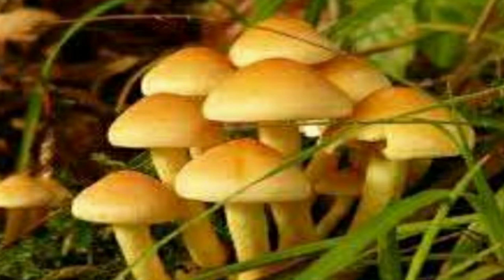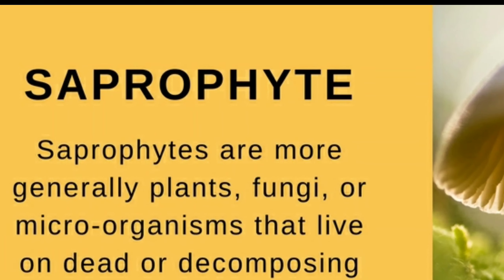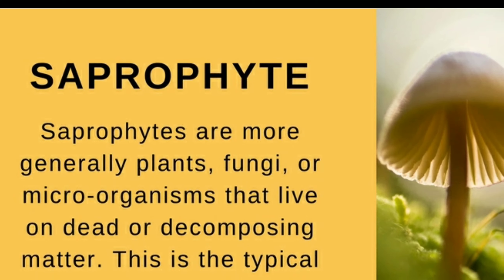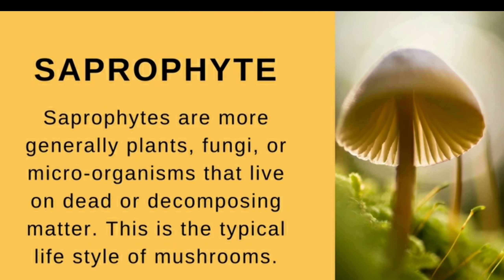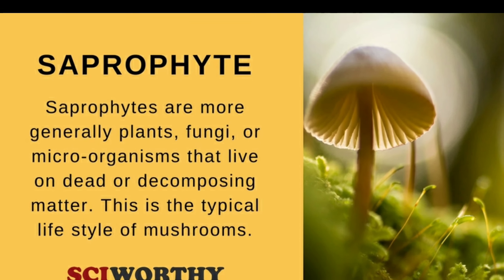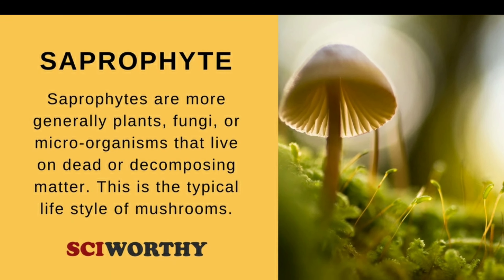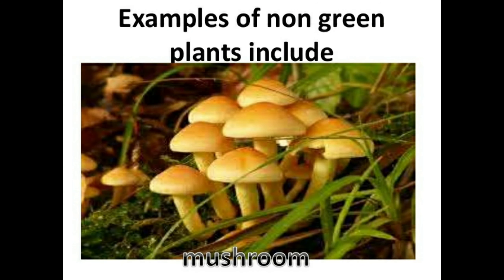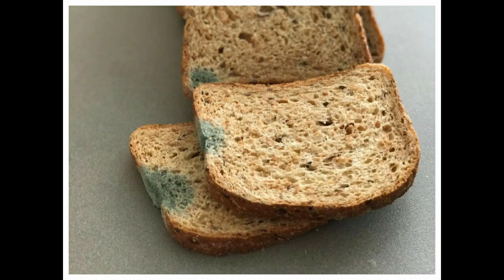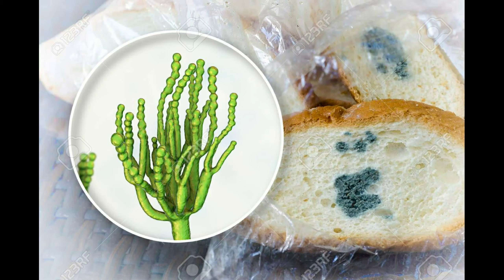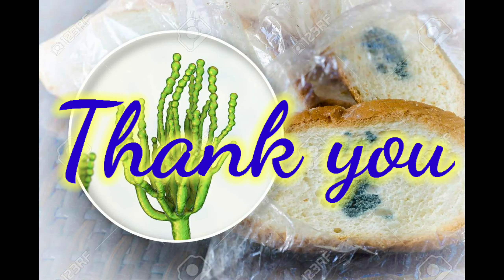They grow on dead and decaying animals and plants — joh dead hote hain, joh animals and plants marae hue hote hain, joh un peh grow hote hain. So they are called saprophytes or saprophytic plants. Examples are mushroom and fungus — bread pe jo fungus lag jata hai, and mushrooms are examples of such plants.